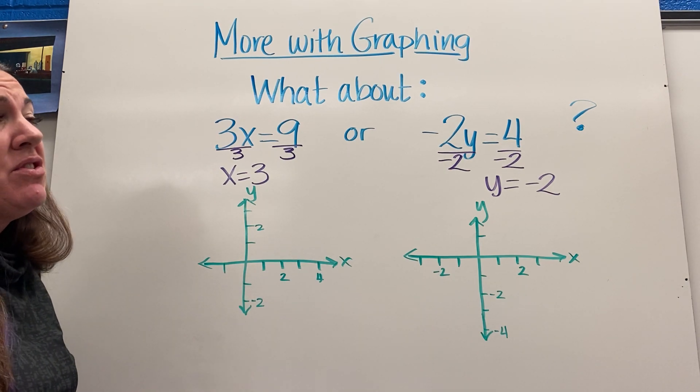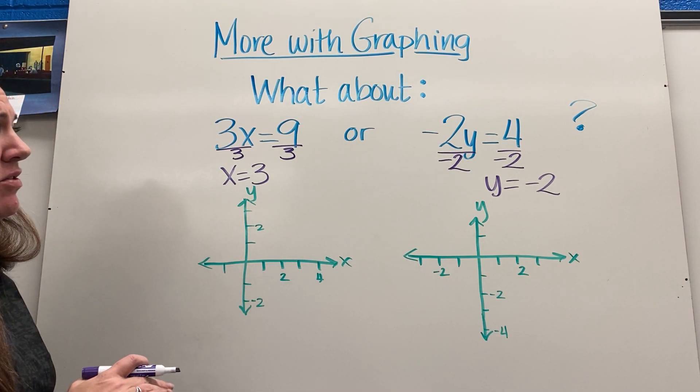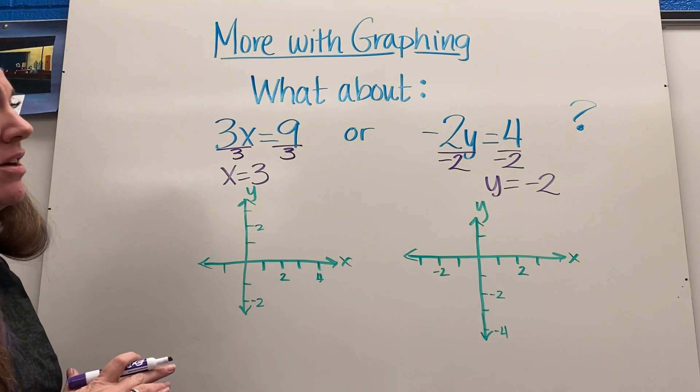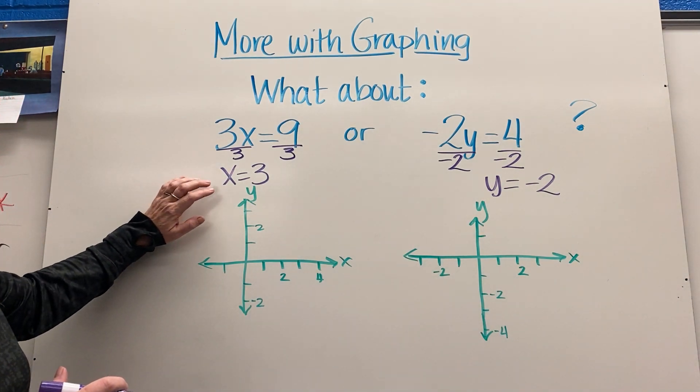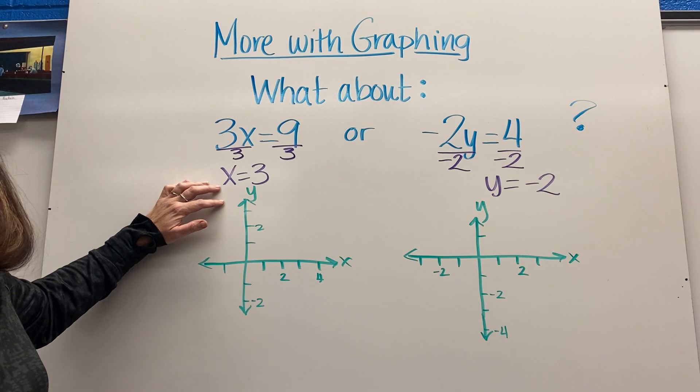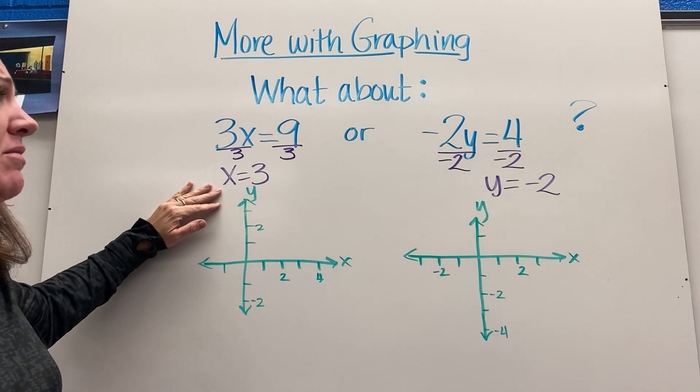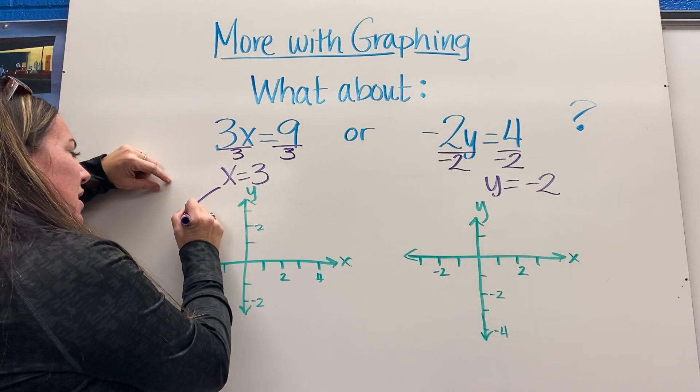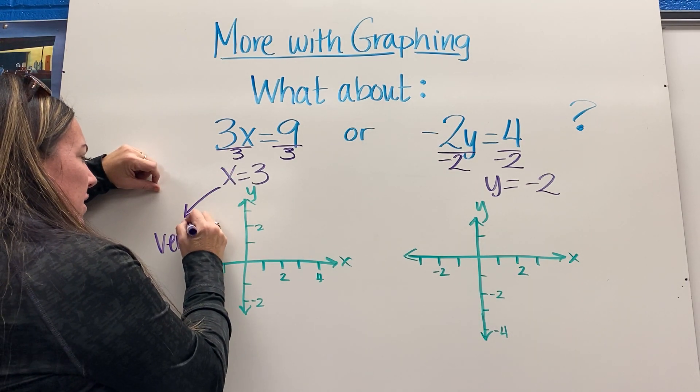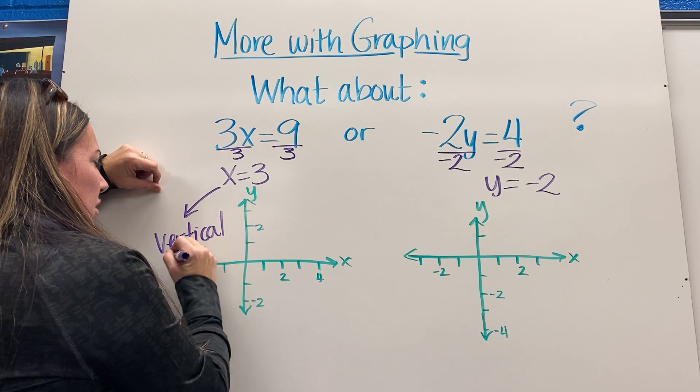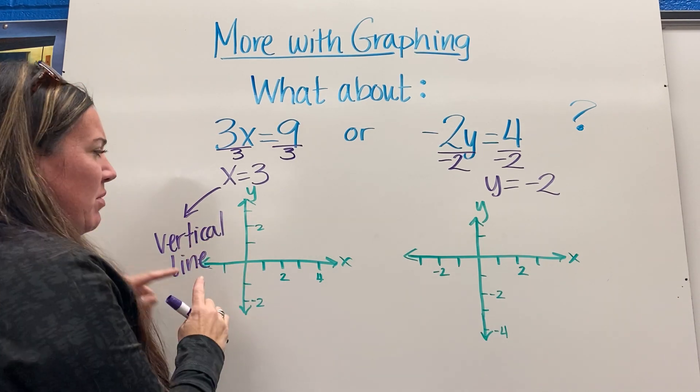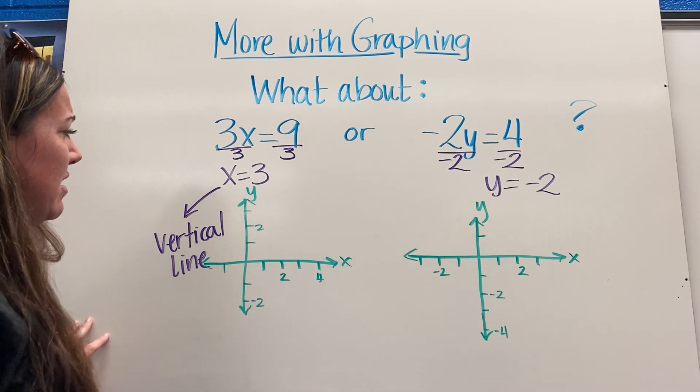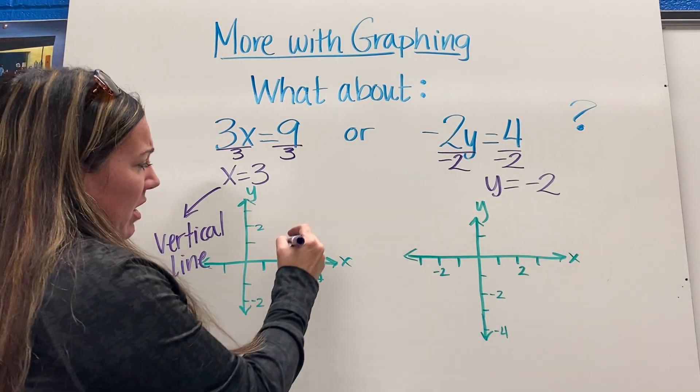You almost sort of have to know this or remember this. One of the ways that I think about this is, x is 3, it doesn't matter what's going on, x is 3. So when I see this, this is a vertical line, which I know is strange because we think of x as a horizontal axis.